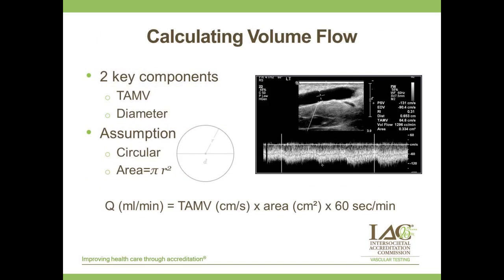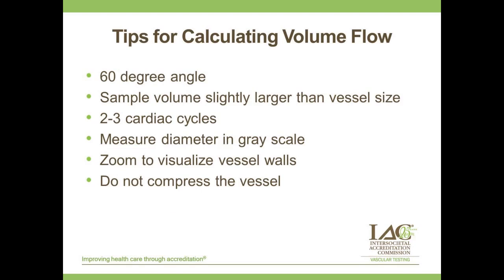There are two key components to calculating flow volume: the timed average mean velocity and the diameter. The area is calculated as π times the radius squared, making accuracy in diameter measurement very important. Modern scanners all have flow volume calculation packages, so consult your application specialist if you need help finding them. Tips for calculating volume flow: use a 60-degree angle, a sample volume slightly larger than your vessel size, measure for two to three cardiac cycles, measure the diameter in grayscale — turn color off to see the vessel wall better, consider using zoom, and make sure you're not compressing the vessel.